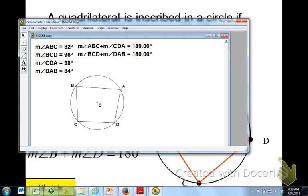Angle A plus C is equal to 180. Angle D plus B add up to 180, no matter where I put that D.